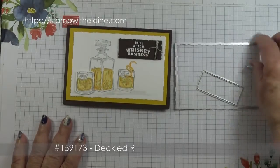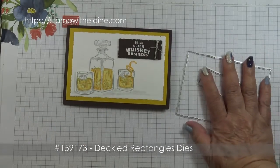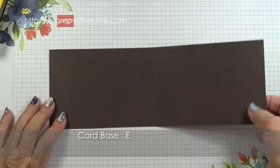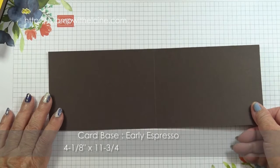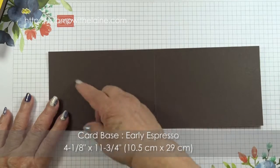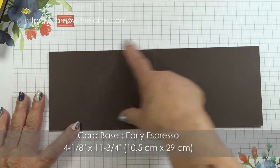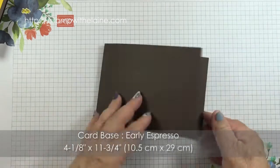So these are the deckled rectangle dies. The card base is in Early Espresso and it measures four and one eighth by eleven and three quarters. In metric that's ten point five by twenty nine centimeters and folded in half.